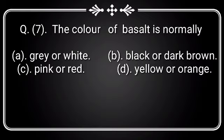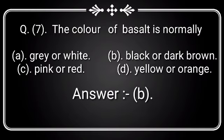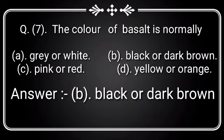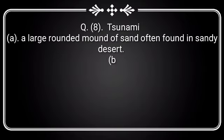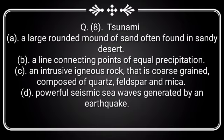Question 7: The color of basalt is normally — Option A: Gray or white, Option B: Black or dark brown, Option C: Pink or red, Option D: Yellow or orange. Answer is Option B: Black or dark brown.